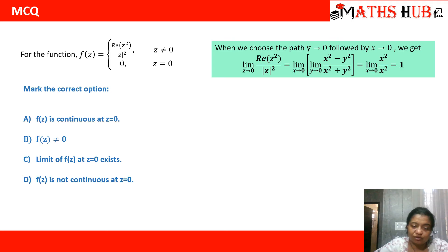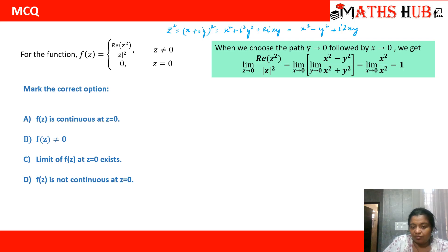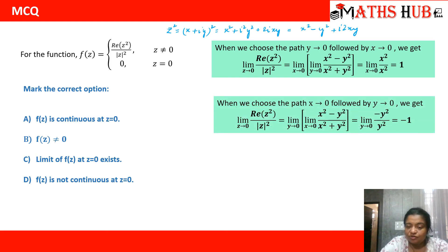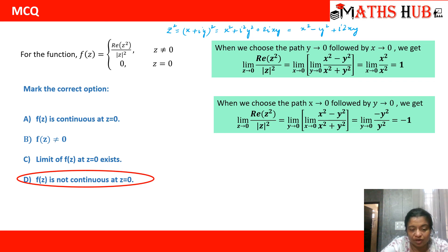Let us check the limit. Now z squared equals x plus iota y whole squared, which gives x squared plus iota squared y squared plus 2 iota x y, simplifying to x squared minus y squared plus iota times 2xy. So the real part of z squared is x squared minus y squared, and the denominator mod z squared is x squared plus y squared. When we choose the path x approaches to 0 first, we get x squared upon x squared which equals 1. When we choose the other path with x approaches to 0 first, x squared becomes 0 and we get minus y squared upon y squared which equals minus 1. Since the path limits differ, the limit does not exist and therefore the function is not continuous.